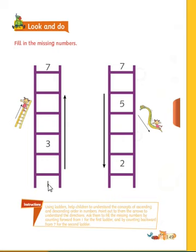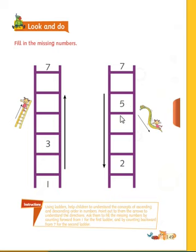Again one step — one, two, three, four, five, six, seven. Now you see, this is the backwards number: seven, six, five, four, three, two, one.